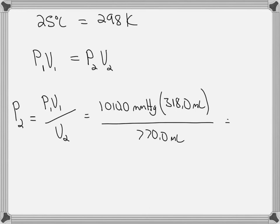So we get a final pressure of 417.1 millimeters of mercury, which looks like it corresponds to answer C. I hope that helps.